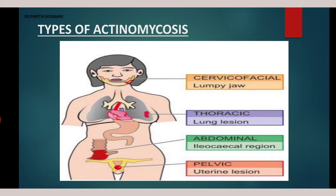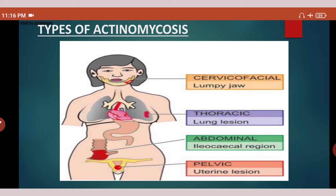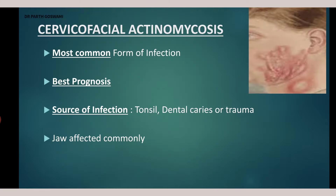Now, the types of actinomycosis — there are basically four types, classified according to the site of involvement. First is cervicofacial actinomycosis, when the cervical region is involved. Second is thoracic actinomycosis, in which the lung is infected. Third is abdominal actinomycosis, in which the ileum, cecum, and appendix can be involved. Fourth is pelvic actinomycosis. We will see each category one by one.